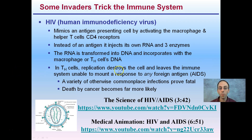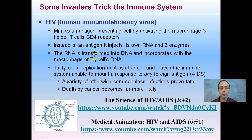So T helper cells replicate, the virus destroys those cells, and leaves the immune system unable to mount responses to any foreign antigens. That's where we get the concept of AIDS. A variety of otherwise commonplace infections prove fatal. If you're infected with HIV, the virus itself is not what actually kills you — it's essentially knocking out T helper cells from performing their proper function. You're more likely to die from cancer or even the common cold because you lack a functional immune system.